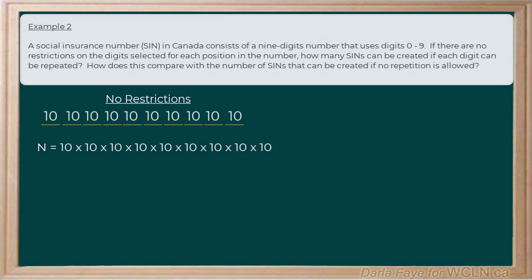But we can be smarter than that. We can use a power of ten here. So, the number of SIN numbers is going to be ten to the power of nine. Nine is the number of digits that we are selecting. So, ultimately, then we can make one billion different SIN numbers.